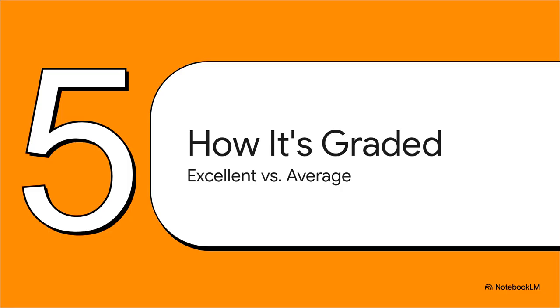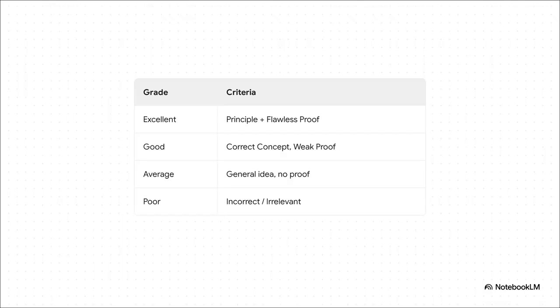Let's put on our examiner hats for a minute. What separates a good answer from a great one? An average answer might correctly mention money illusion, but it's missing the proof — the rigor. The excellent answer that gets you the best grade does three things perfectly: it names the principle, shows a flawless mathematical proof, and — this is the key — explains the link between that proof and the consumer's final choice. That proof isn't just extra credit. It's the absolute game changer.